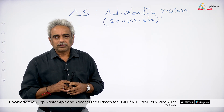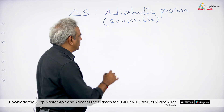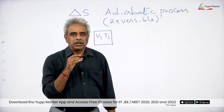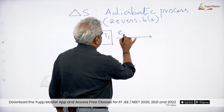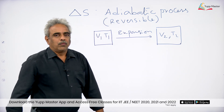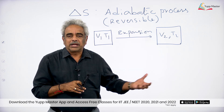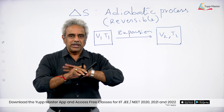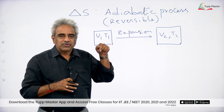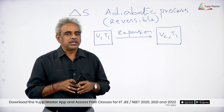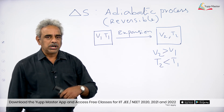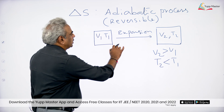In an adiabatic process there is no heat exchange between system and surrounding. Suppose a system with volume V1 and temperature T1 is undergoing expansion to volume V2 and temperature T2. Since this is an adiabatic process, the system must use its own energy for expanding, so the temperature will drop. Therefore V2 > V1 and T2 < T1.